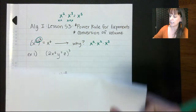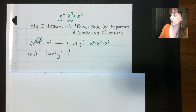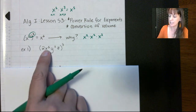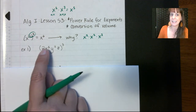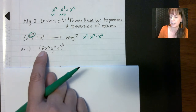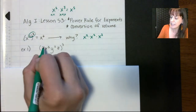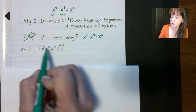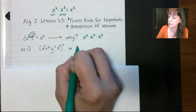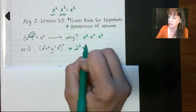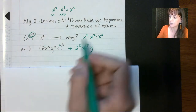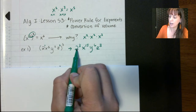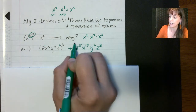Let's go ahead and practice. Here's our first example. All we want to do is distribute this three to all of our terms. Remember, x to the fifth — that fifth only applies to the x, not to the coefficient two. If anything doesn't have an exponent, put a one there so you remember to distribute to it. I take this three and distribute it to all four things. I end up with two to the third, x to the fifteenth, y to the sixth, and z to the third. The only simplification is two to the third equals eight, so we write eight there.